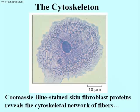This module deals with the cytoskeleton. What you are now looking at is a cell that has been stained with Coomassie Blue. It's a fibroblast from skin. Coomassie Blue is a general stain for proteins.